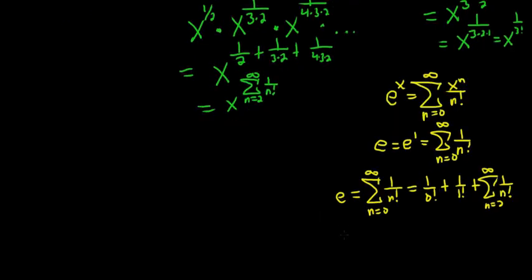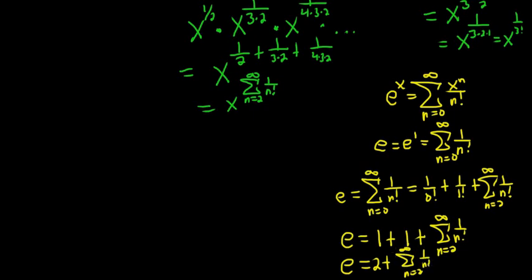So e is equal to 1, right? 0 factorial is 1 plus 1 plus infinite sum as n runs from 2 to infinity of 1 over n factorial. What a cool problem. This problem is awesome. And now you can solve for this. So the infinite sum as n runs from 2 to infinity of 1 over n factorial is just going to be e minus 2. So this is equal to x to the e minus 2.